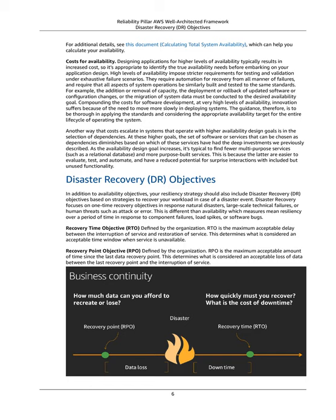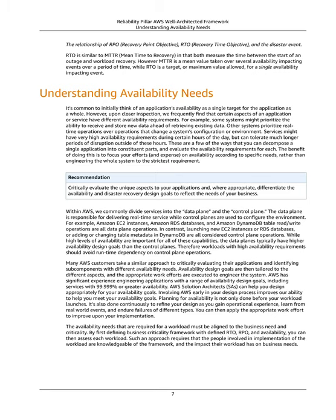Recovery Time Objective (RTO): Defined by the organization, RTO is the maximum acceptable delay between the interruption of service and restoration of service. This determines what is considered an acceptable time window when service is unavailable. Recovery Point Objective (RPO): This determines what is considered an acceptable loss of data between the last recovery point and the interruption of service. RTO is similar to MTTR in that both measure the time between the start of an outage and workload recovery. However, MTTR is a mean value taken over several events over a period of time, while RTO is a target or maximum value allowed for a single availability-impacting event.